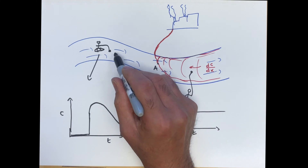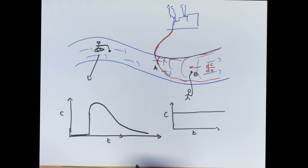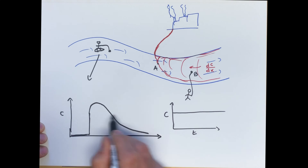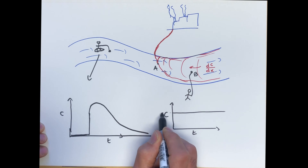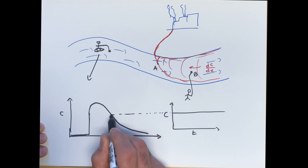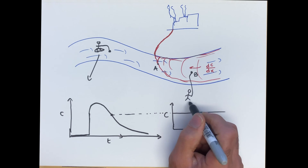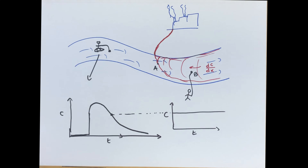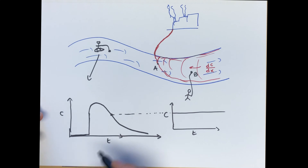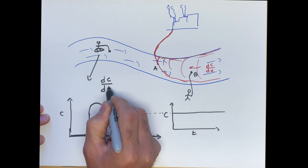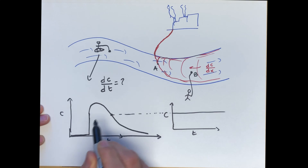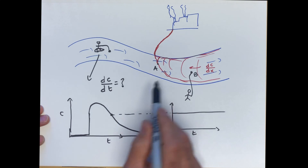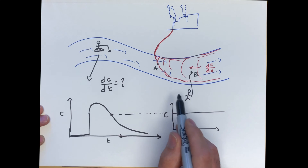We want to make sure that as they approach point B, that concentration is identical to the one measured by the person in the Eulerian frame. From the perspective of the person on the boat, there is a change in concentration over time — a DC/DT. The question is: what is that equal to in terms of the spatial distribution of concentration?